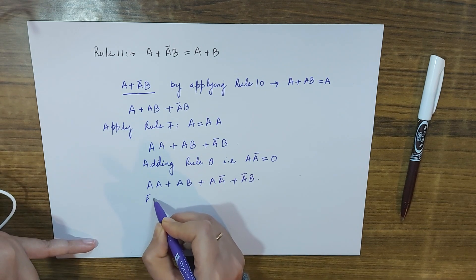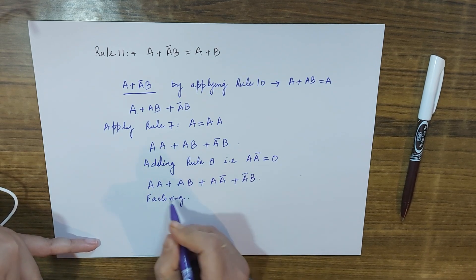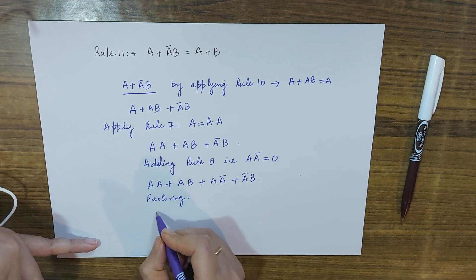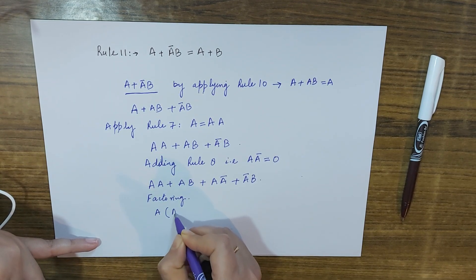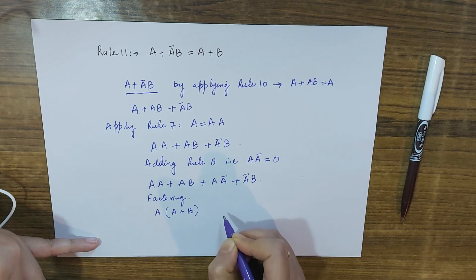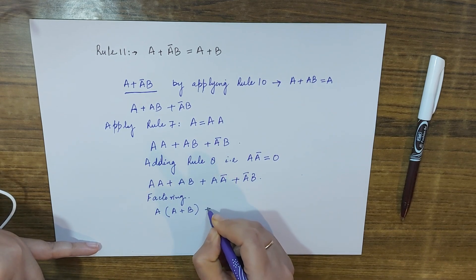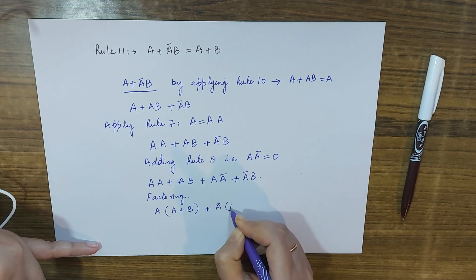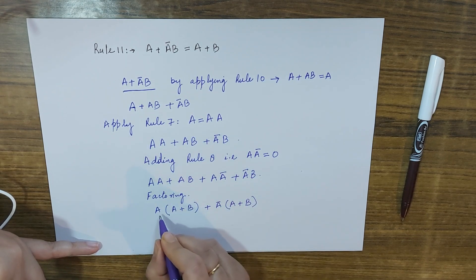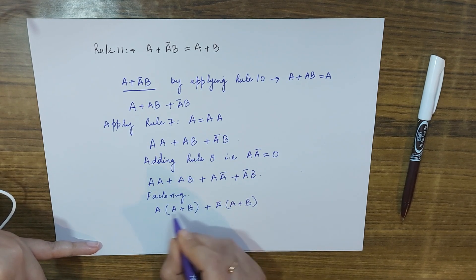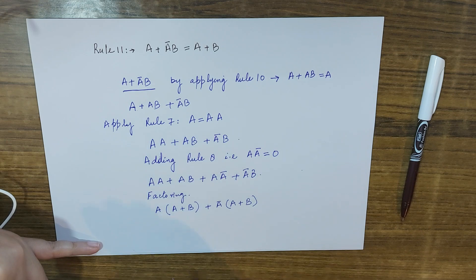Now I will apply factoring. From the first two terms I take out A, since A is common in both, giving A(A plus B) by the distributive law. From the last two terms I take out A-complement, giving A-complement(A plus B).